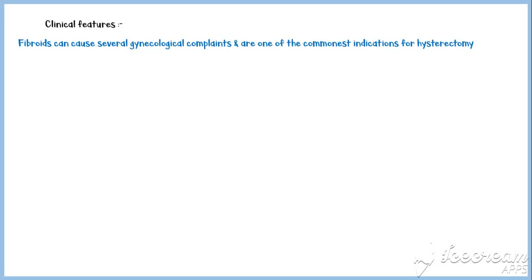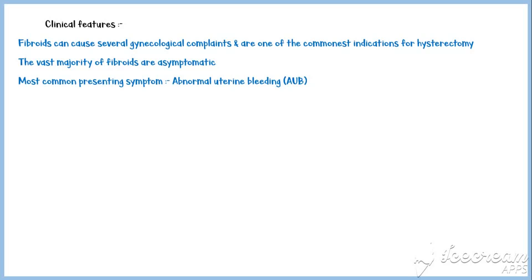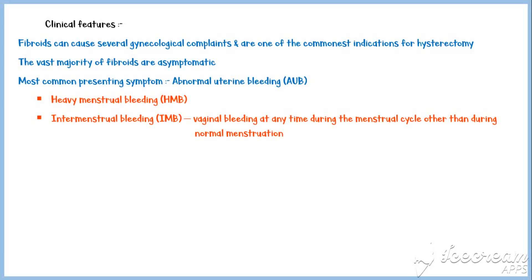Fibroids can cause several gynecological complaints and are one of the commonest indications for hysterectomy. However, the vast majority of them are asymptomatic. If present, the most common symptom is abnormal uterine bleeding. This could be either heavy menstrual bleeding or intermenstrual bleeding, which refers to vaginal bleeding at any time during the menstrual cycle other than during normal menstruation. Sometimes there could be a combination of these two types.